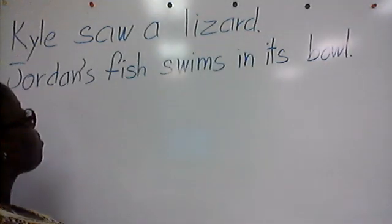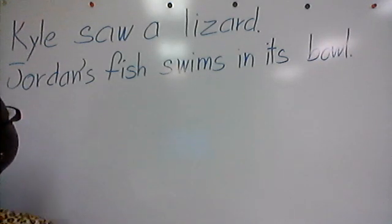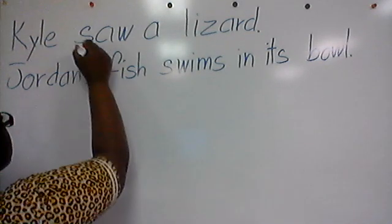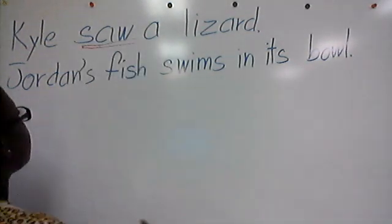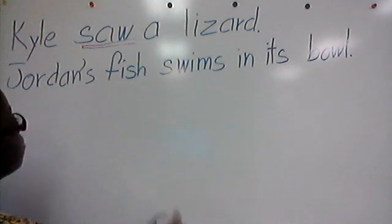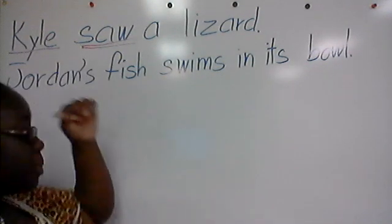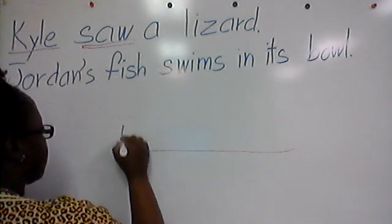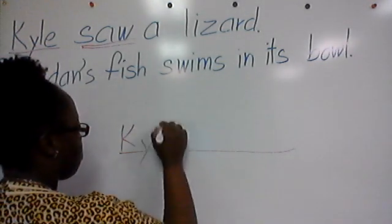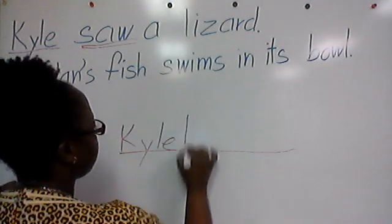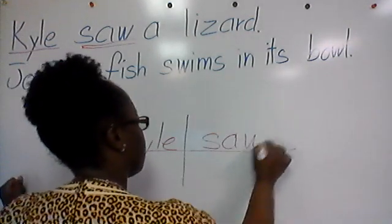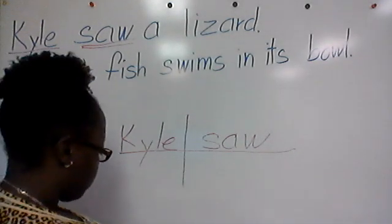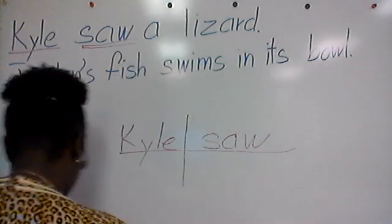Okay, so the first thing for diagramming the sentence — I need my pink marker. I need to find the verb first — the word showing action. Reading the sentence: 'Kyle saw a lizard.' The word showing action in the sentence is 'saw.' Now, who saw a lizard? Kyle did. Underline that once. We have our subject and our verb, so you diagram: Kyle | saw — just like that. Make sure the line goes all the way through.